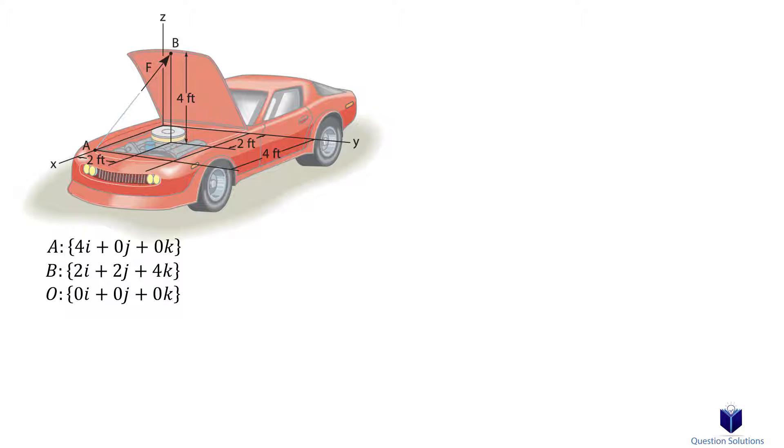To do that, let's write down a position vector from A to B. We write it from A to B because you can see that the force originates at A and is going towards B.